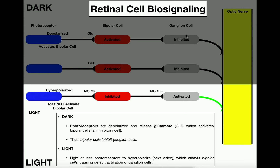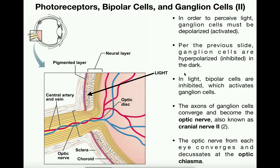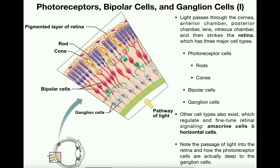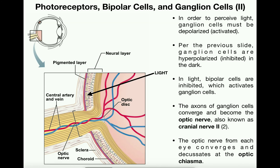In order to have perception of light, you have to have activation of ganglion cells. In the light, the bipolar cells were inhibited because the photoreceptor cells were hyperpolarized, and that causes activation of the ganglion cells. We're looking at this layer right here — this is where the retina is. Those ganglion cells, which are the gray cells right here, notice their axons become continuous with the optic nerve — that's what this leads to right here.